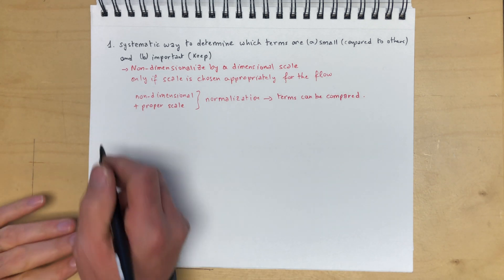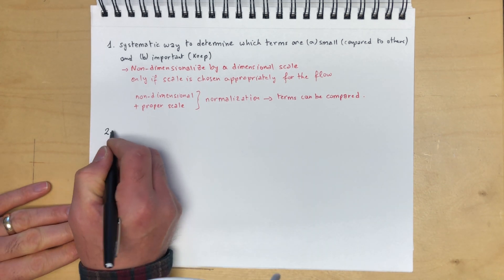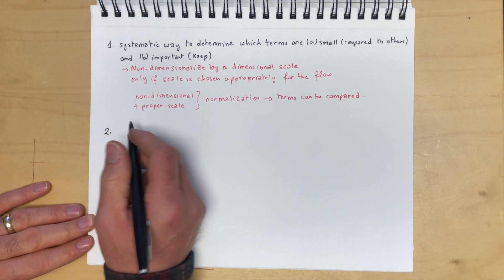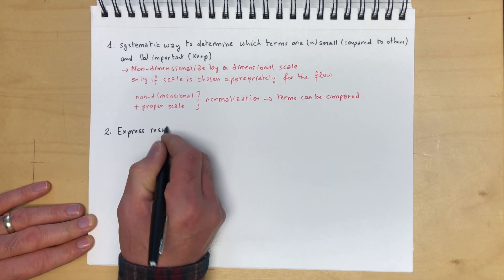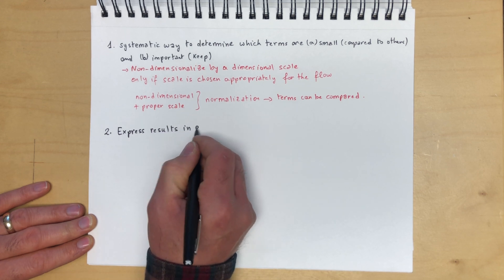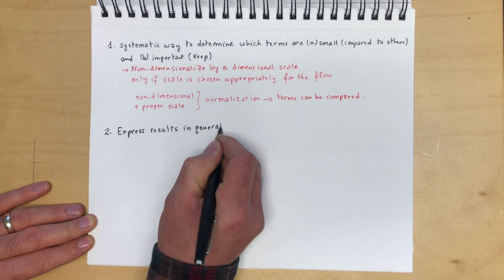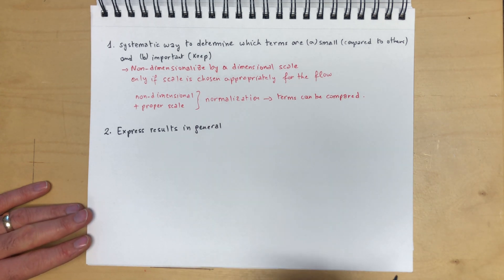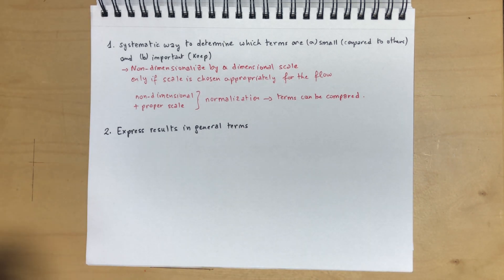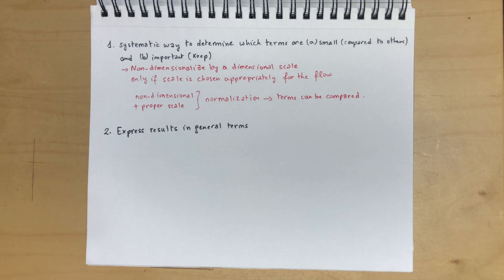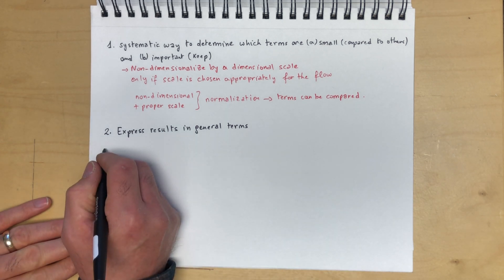Some of the other benefits of non-dimensionalization or normalization is you express the results broadly in general terms. You don't have to refer to a specific or particular length scale or particular problem. So you can say viscous terms are important here because the Reynolds number is small, for example, or we can neglect viscous forces because the Reynolds number is large. And we'll see how that shows up in the equations.